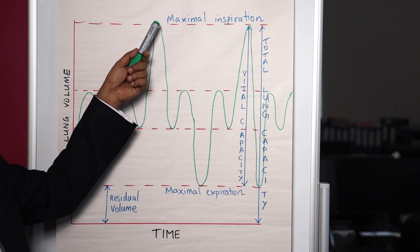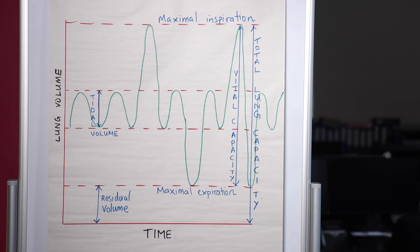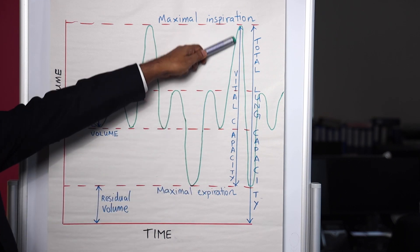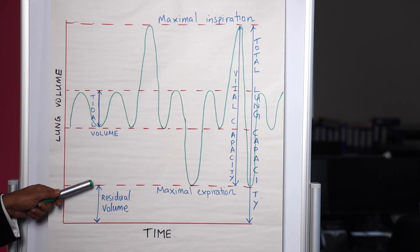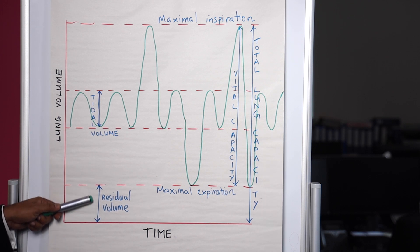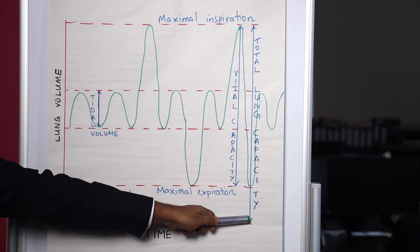Now the first question is: what do all these terms and abbreviations mean? Let's start with two easy reference points — maximal inspiration and maximal expiration. All the air blown out represents the vital capacity. Even after blowing out everything, there is some air in the lungs — that is the residual volume.